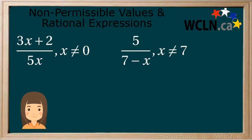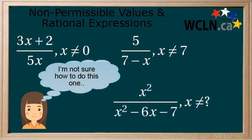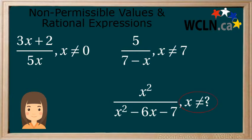What do you do if you come across x squared over x squared minus 6x minus 7? How do you determine the non-permissible values of this rational expression? The key is going to be remembering your factoring rules.